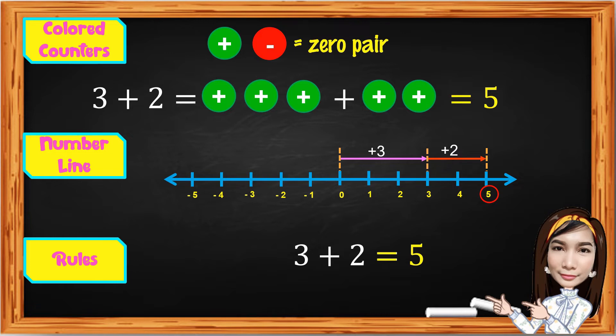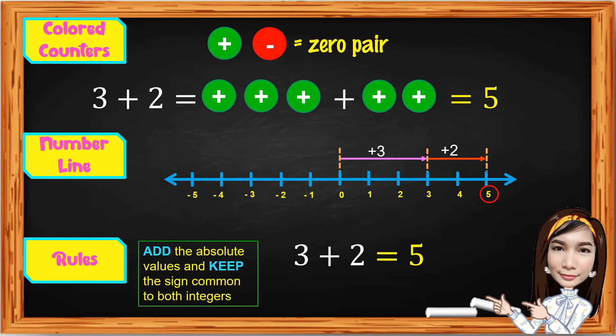The third method is the rules for adding integers. Take note: add the absolute values and keep the sign common to both integers. Therefore, positive plus positive equals positive.